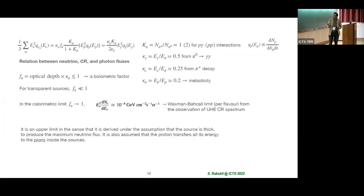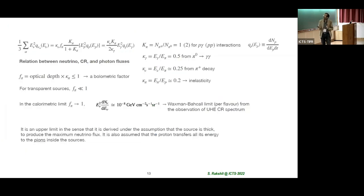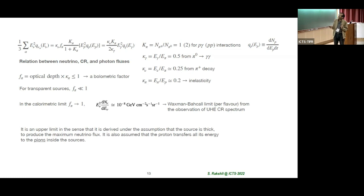You expect this kind of power law because basic particle physics and back-of-the-envelope calculations give a relation connecting the neutrino flux, the proton flux (which are the cosmic ray flux), and the photon flux — and the power law is essentially the same. When cosmic rays are interacting, you expect the same power law everywhere although the energy is shifted. The Waxman-Bahcall flux is an upper limit in the sense that the source is thick and produces the maximum neutrino flux.